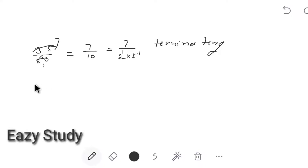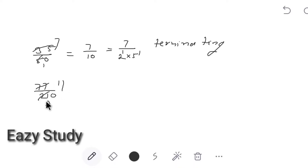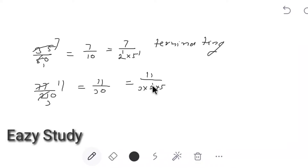Now check 77 by 210. Dividing by 7, this simplifies to 11 by 30. Writing 30 as 3 into 2 into 5 — the denominator has a factor of 3, which is neither 2 nor 5. Therefore this is not a terminating decimal.